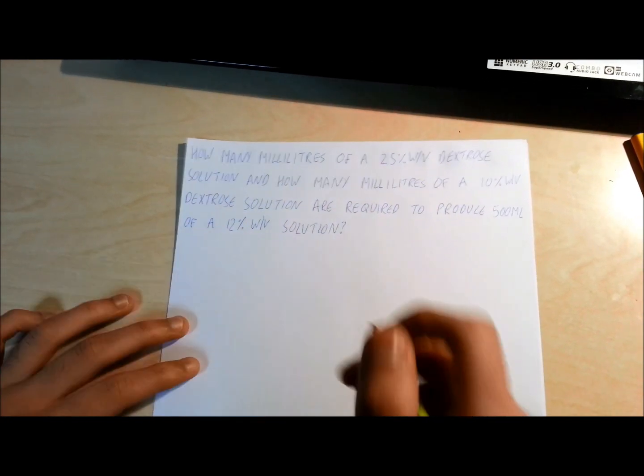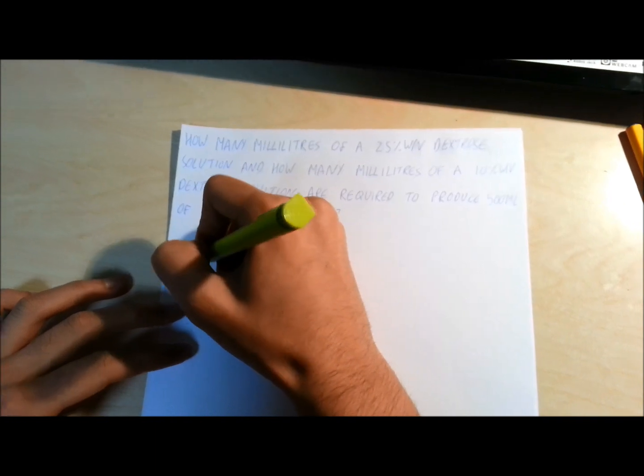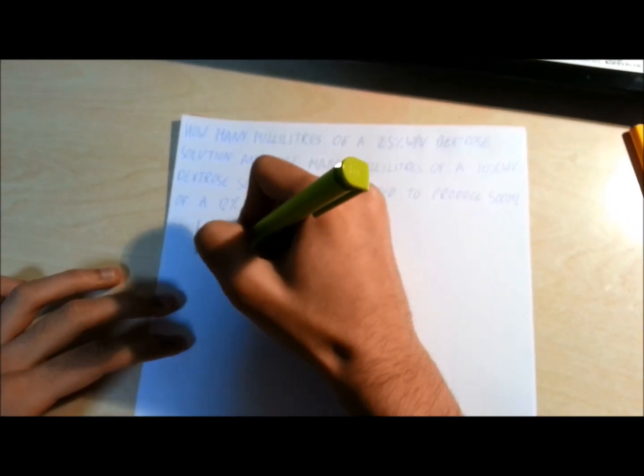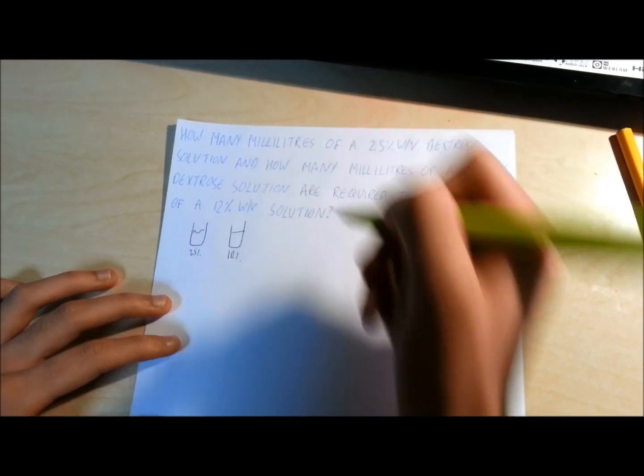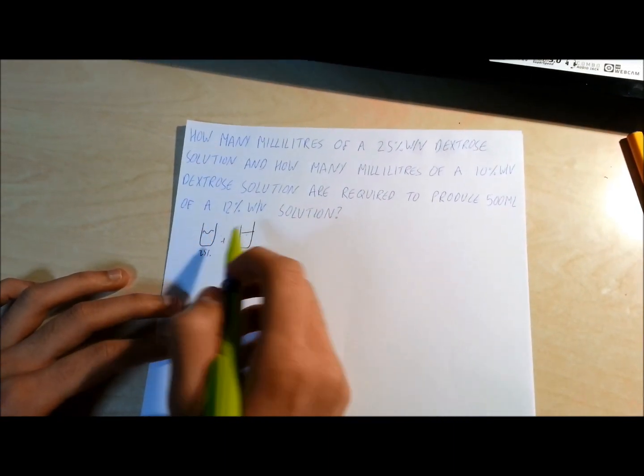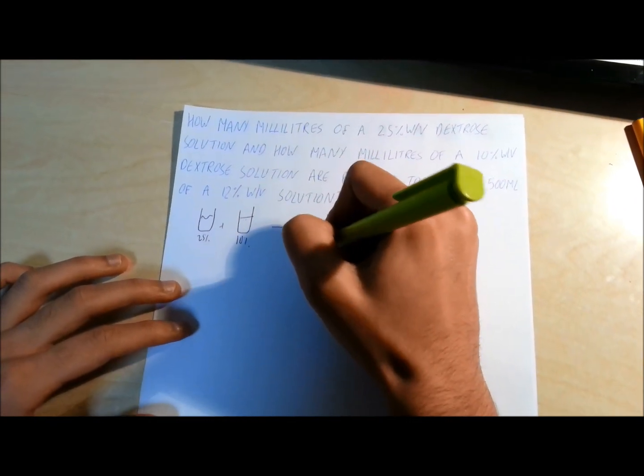So basically, to visualize it, what we have is a 25% solution and a stock solution of 10% solution. And we want to combine the two somehow, take a bit out of that, to make a 12% solution.